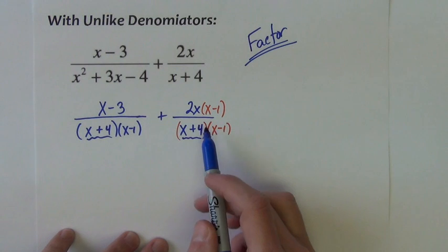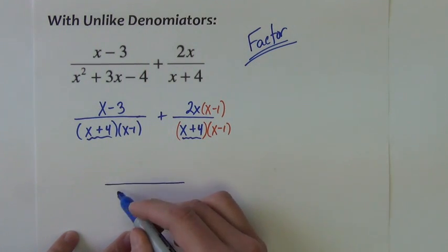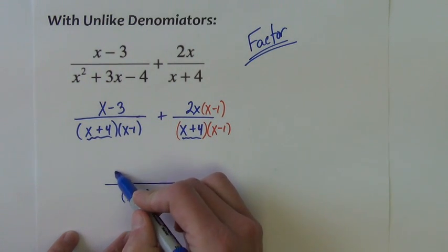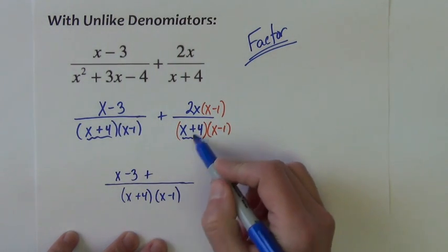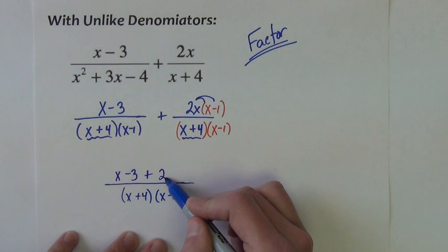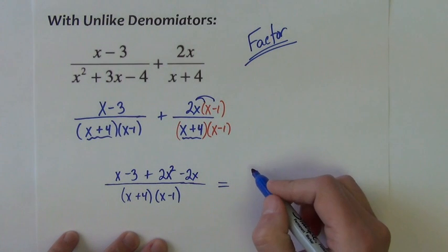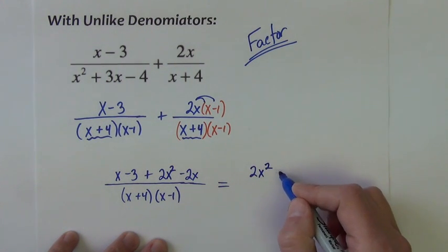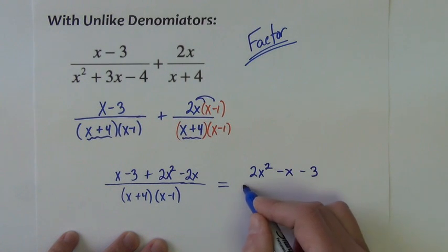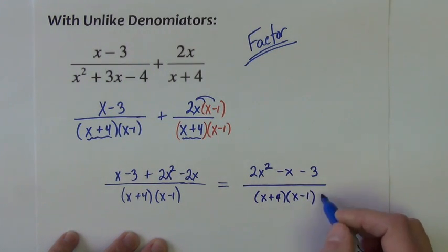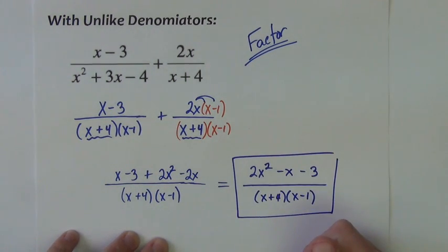So now, looking at the fractions, are they common denominators? Well, absolutely they are. The common denominator is x plus 4, x minus 1. The numerator is x minus 3, that's the first fraction, plus this one. I'll distribute to get 2x squared minus 2x. And now I just reduce the numerator of this fraction, or simplify. 2x squared minus x minus 3. Again, I could foil the denominator if I wanted to, but I would say, what's the purpose? Why would we want to foil that denominator?